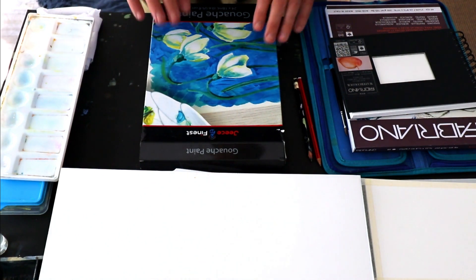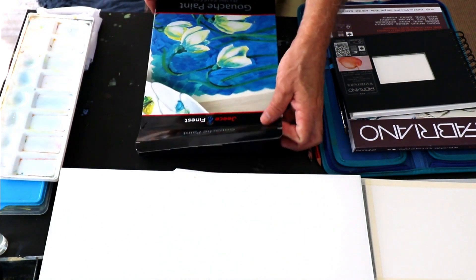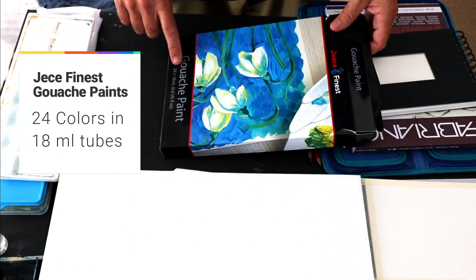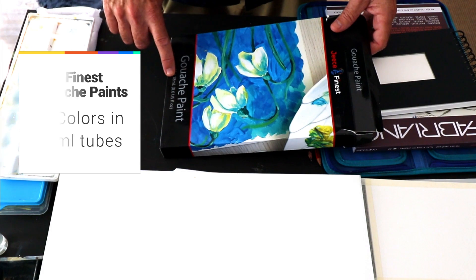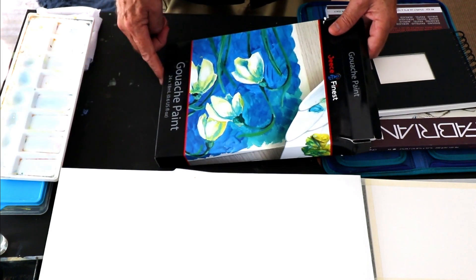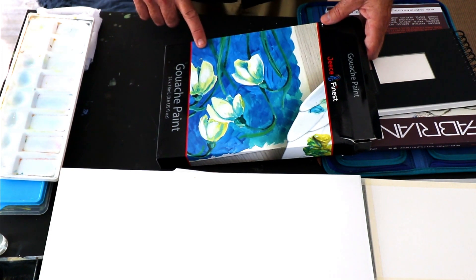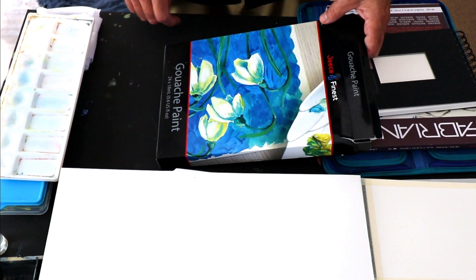Starting off of course with the paints. I'm using a set of G's Finest. This is 24 tubes of 18 milliliter gouache paint. And I've done a more extensive review on this paint and you can find it in the description below and also where you can get yourself some of these paints.